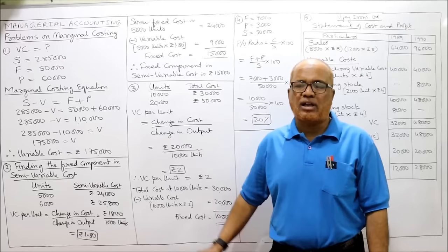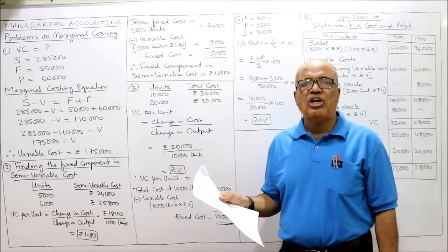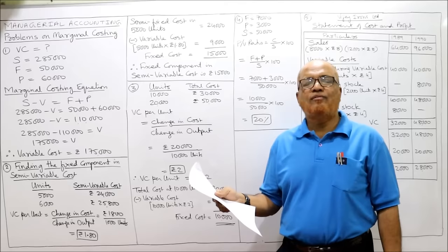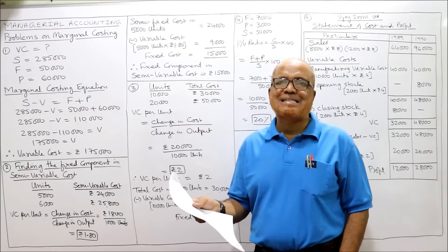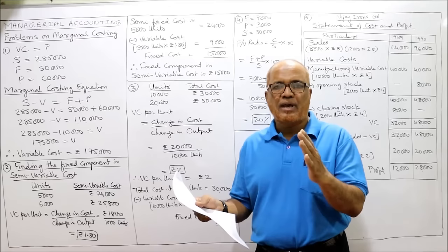Now starting the first problem on marginal costing: find the amount of variable cost from the following information. Given: sales = 2,85,000; fixed cost = 50,000; profit = 60,000. We need to find the variable cost.